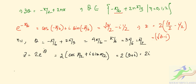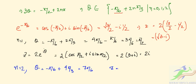For n = 2: θ = -π/6 + 4π/3 = 7π/6. So z = 2(cos(7π/6) + i·sin(7π/6)).